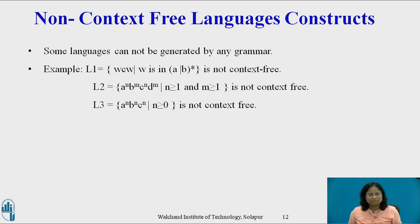L3 = {a^n b^n c^n | n ≥ 0}, that is, strings in the language of a*b*c* with equal numbers of a's, b's, and c's, is also not a context-free language.